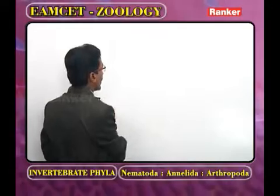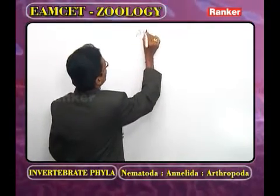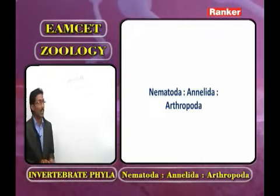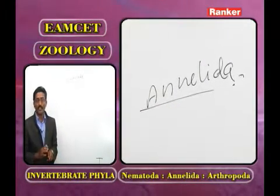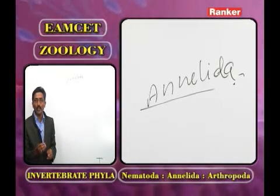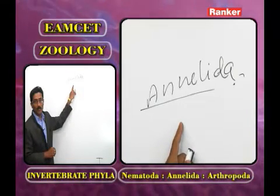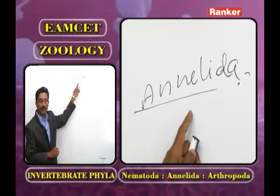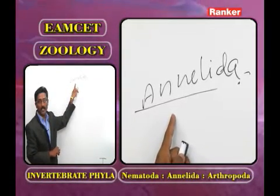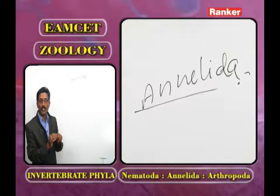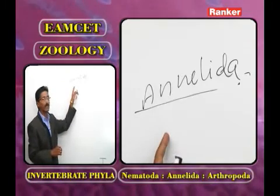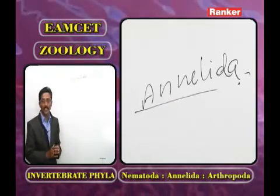The next phylum is Annelida. The word Annelida was proposed by J.B. Lamarck, who also proposed the word biology. Lamarck wrote the book Philosophie Zoologique and explained the inheritance of acquired characters, the use-and-disuse principle, and the influence of environment.